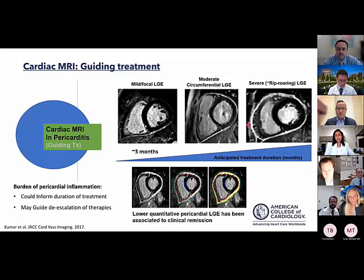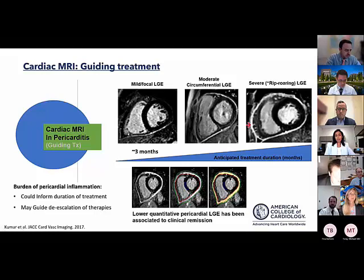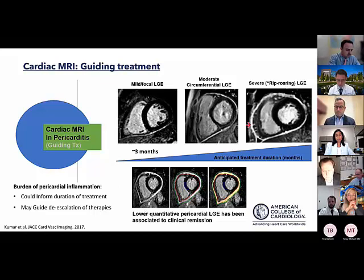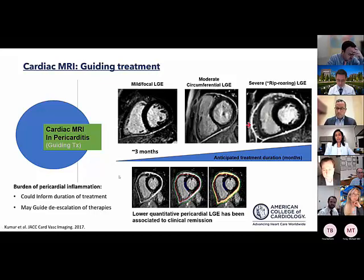MRI and LGE can also predict how long to treat and guide de-escalation based on inflammation burden. Mild enhancement may be suitable for three months of treatment, while very intense circumferential — what Dr. Klein calls 'rip-roaring' pericarditis — may need longer treatment or more careful de-escalation. There is evidence that quantifying LGE burden on MRI can be of help, though it is uncertain if this still applies for more advanced therapies.